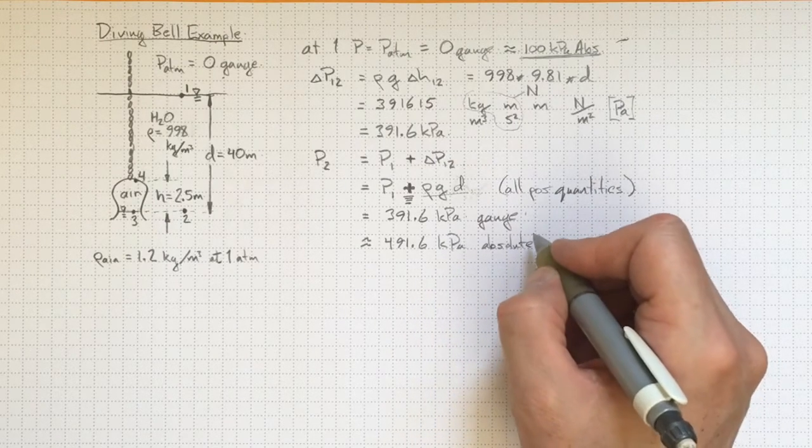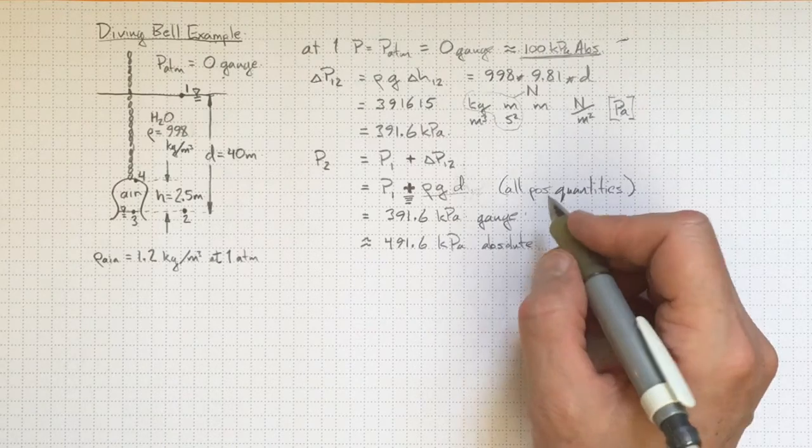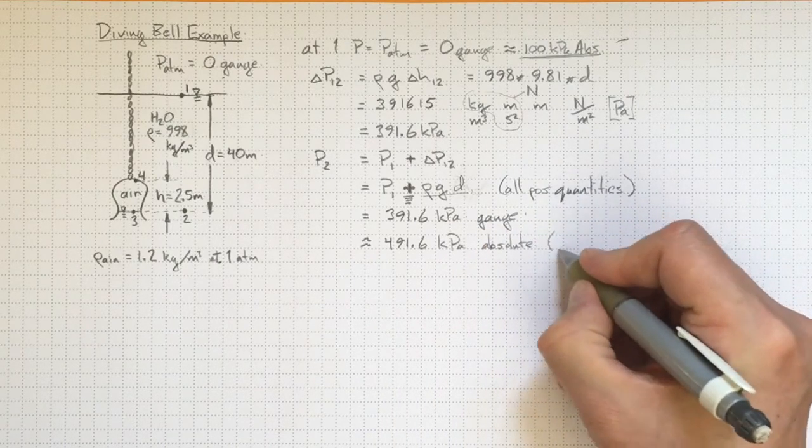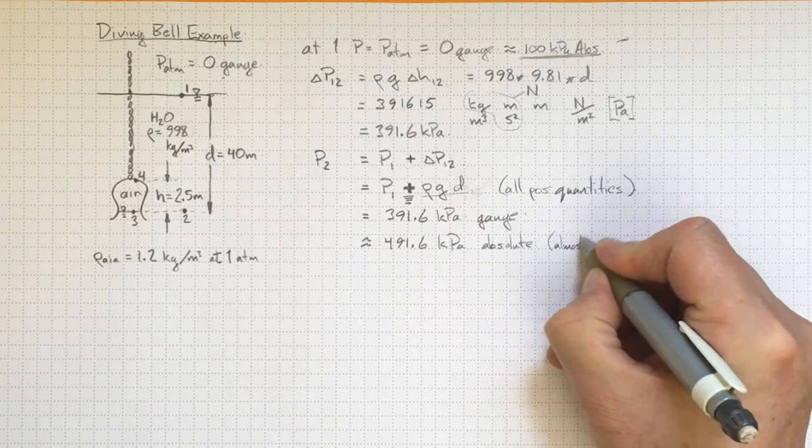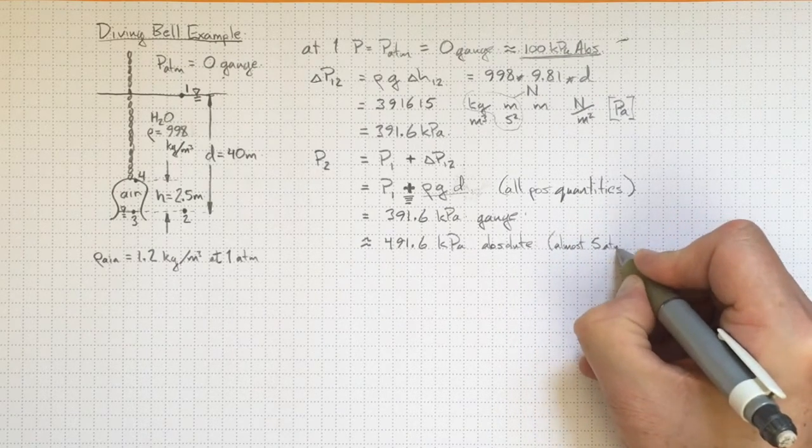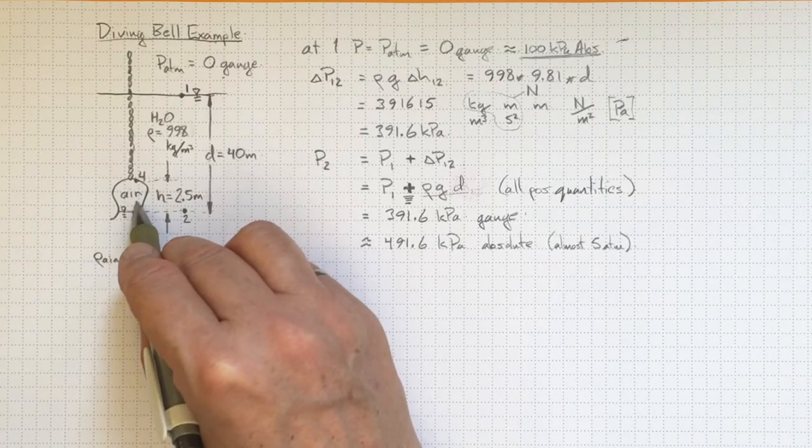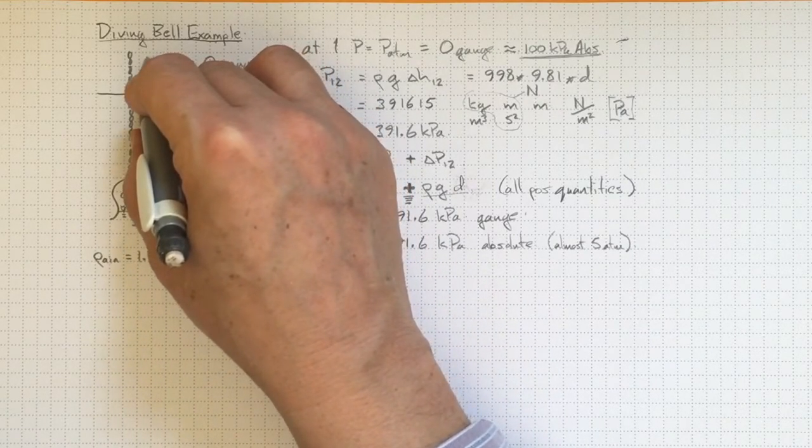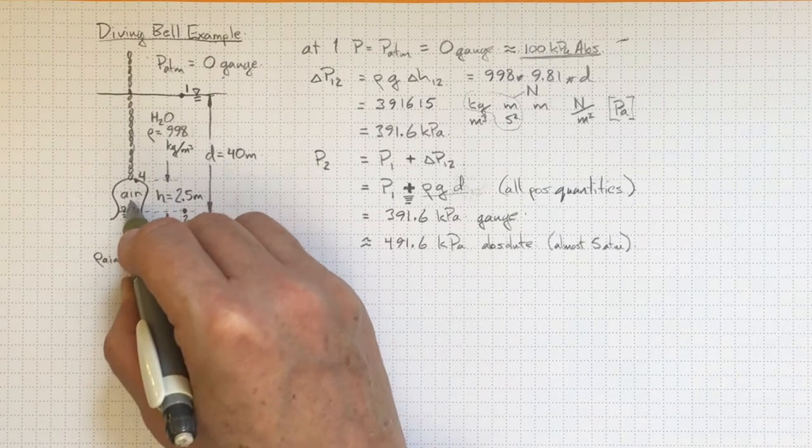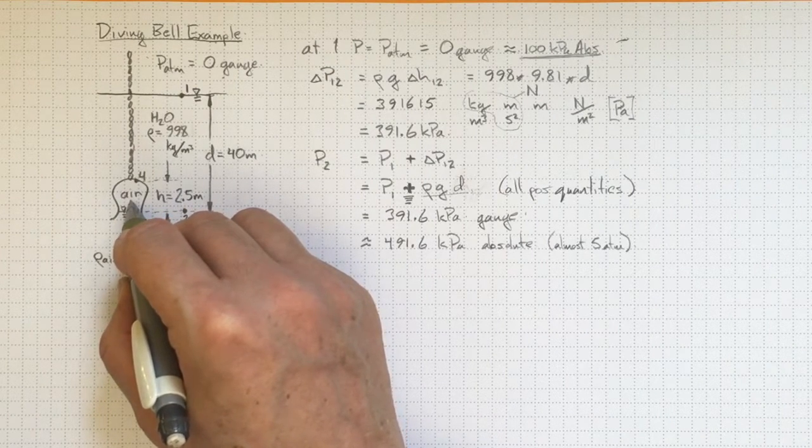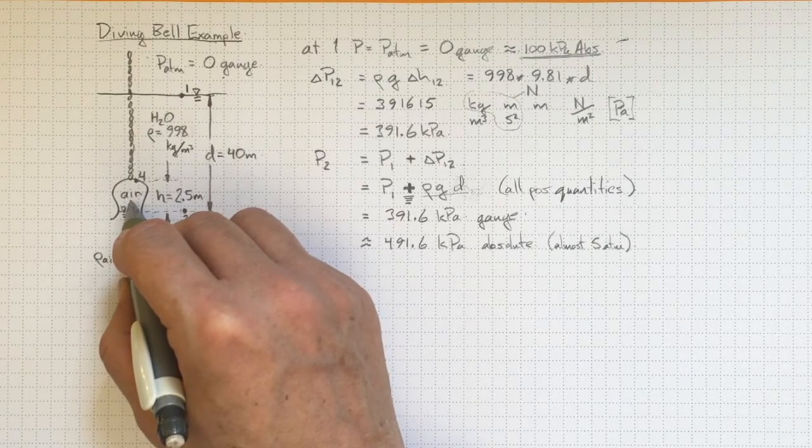Most of the time we don't need to know the absolute pressure, so most of the time we will work entirely in gauge pressure. But note that this is almost 5 atmospheres. So the air in this diving bell is at about 5 times the pressure as the air up here in the atmosphere. If it's at 5 times the pressure, it'll have a considerably higher density. Let's just keep that one in mind along the way.